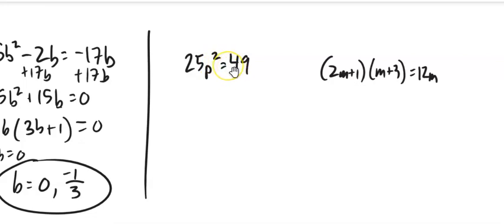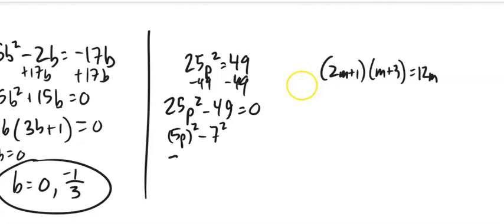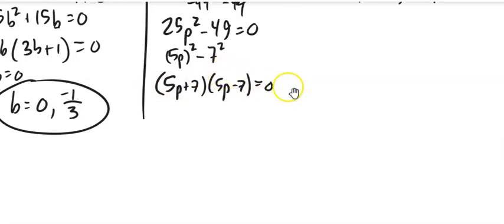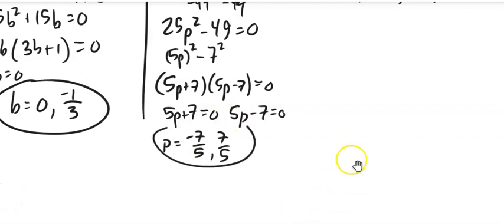25B squared equals 49. There's a couple different ways to solve this. I'm going to do this one in our quadratic style. I'm going to get it equal to zero. So subtract 49. And I notice this is the difference of two squares. This is 5P squared. And this is seven squared. So I could say 5P plus seven times 5P minus seven equals zero. So both of these two things equal zero. This times this is zero. So this equals zero or this equals zero. When I go to solve those, subtract seven, divide by five, add seven, divide by five. There's a nice little symmetry there.